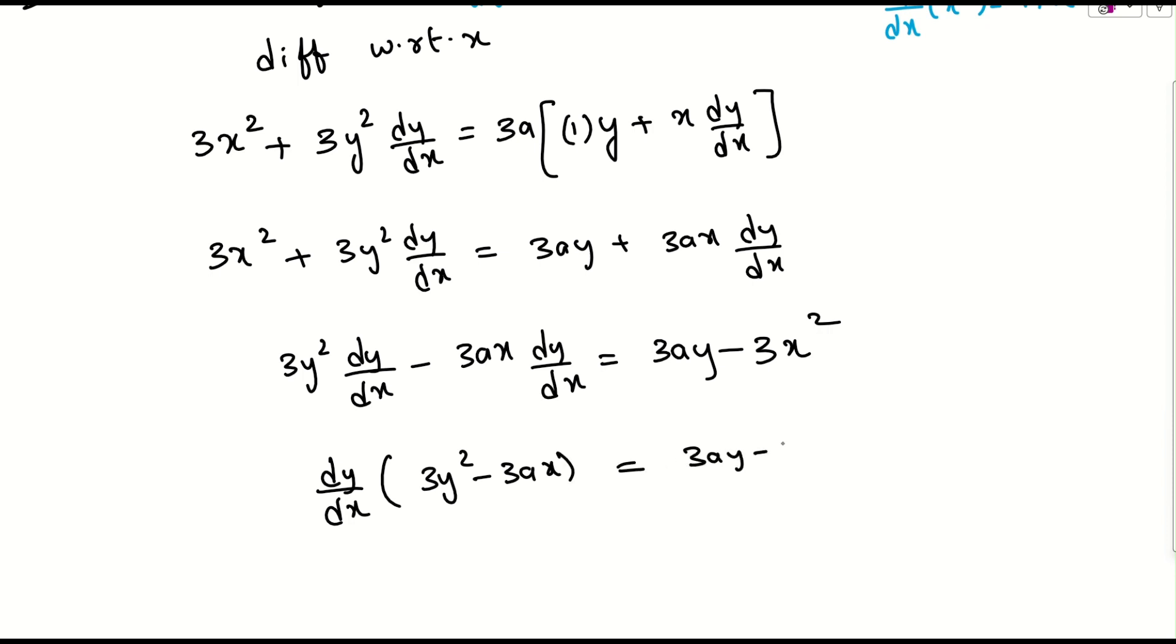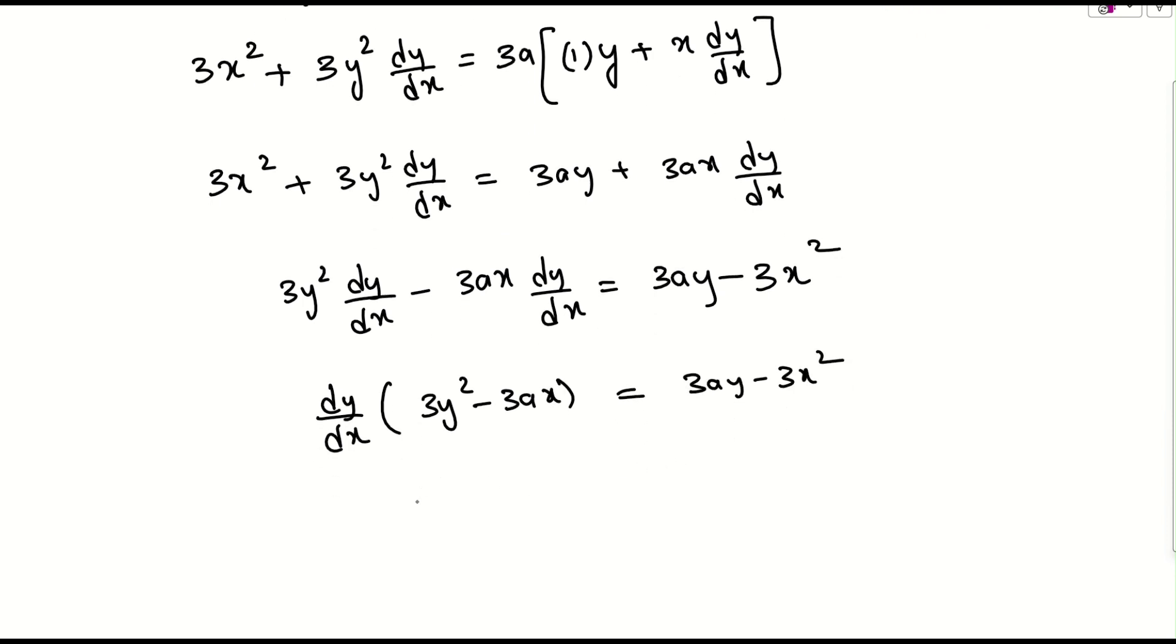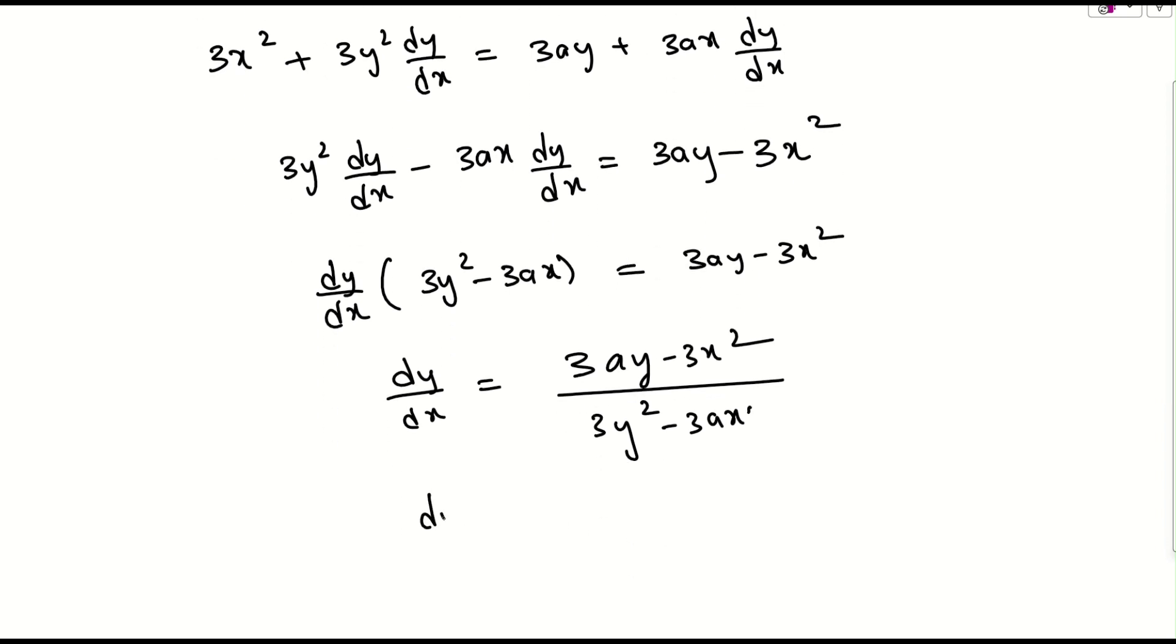So if I take $dy/dx$ common, this is $3y^2 - 3ax$ must be equals to $3ay - 3x^2$. We want $dy/dx$, so if I send the multiplication part to the right side, it will come in the denominator, that is $3y^2 - 3ax$.